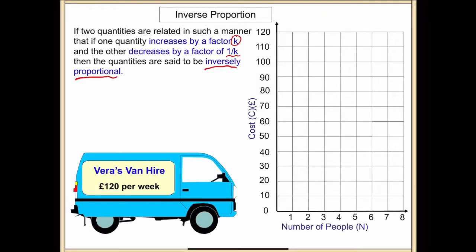Vera's van hire, 120 pounds per week. You've got a cost and number of people. Two people, half the cost. Three people, third of the cost. Apologies for the music and sound effects.